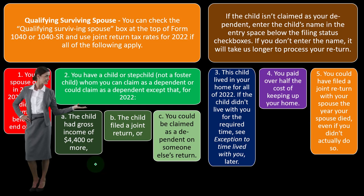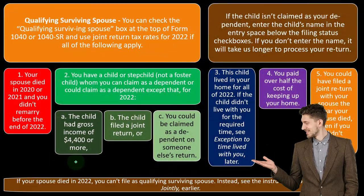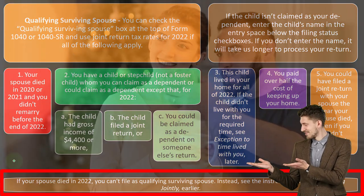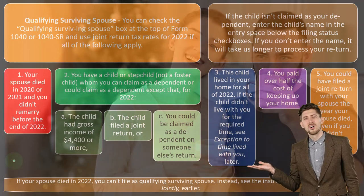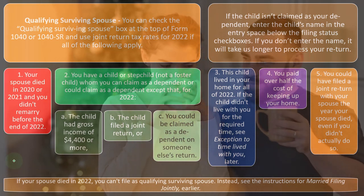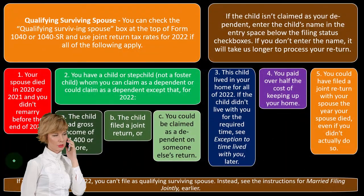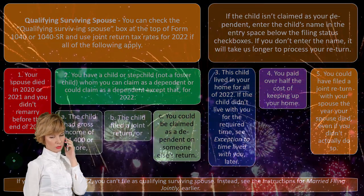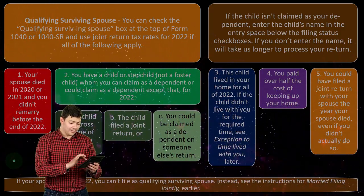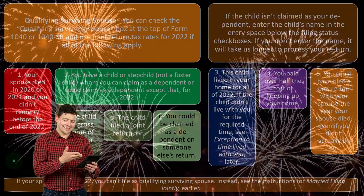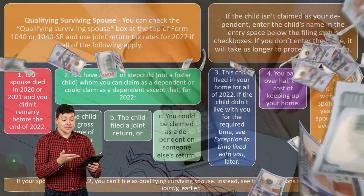Number five: you could have filed a joint return with your spouse the year your spouse died, even if you didn't actually do so — meaning you probably filed married filing joint in the year of death, or possibly a married filing separate return. Note: if your spouse died in 2022, you can't file as a qualifying surviving spouse. Instead, see the instructions for married filing jointly, because the spouse who died still has income in that year requiring a joint return to be filed. The qualifying surviving spouse status applies in the years after the year of death.